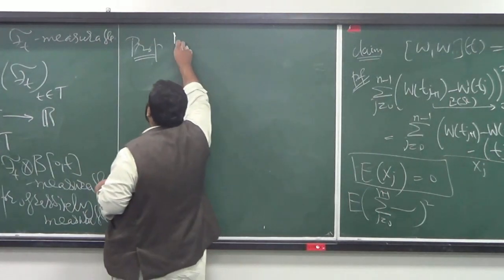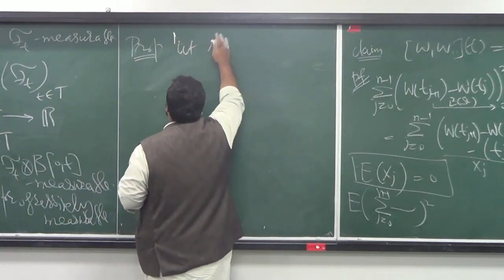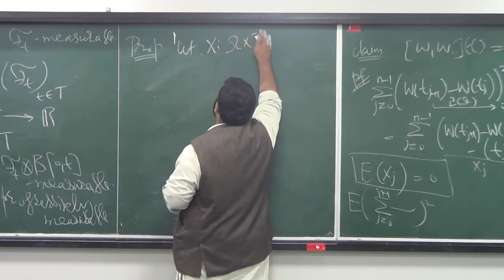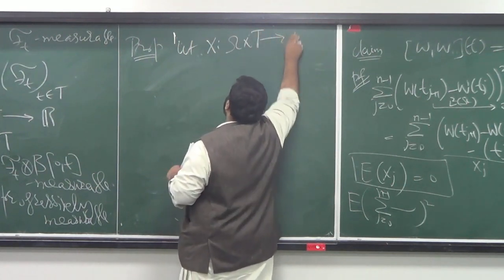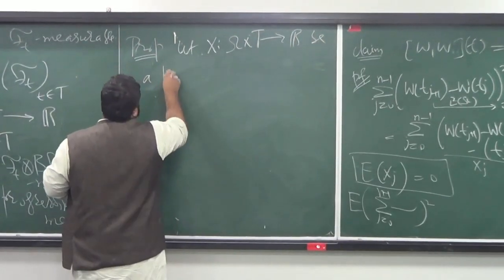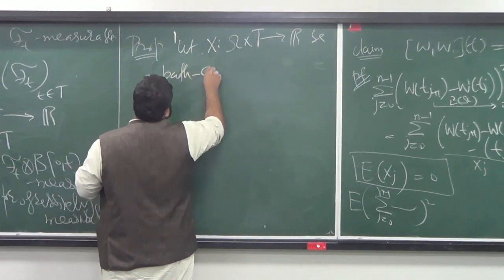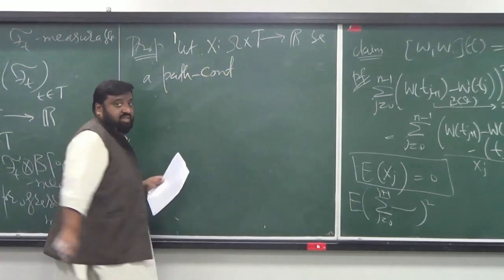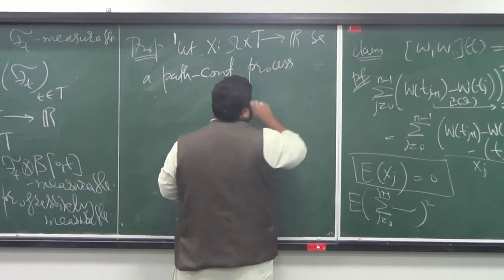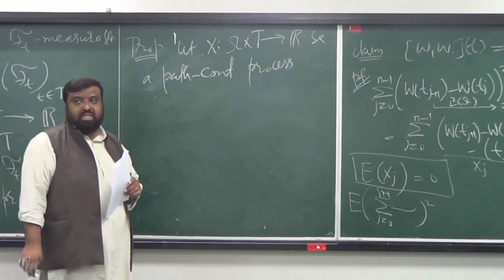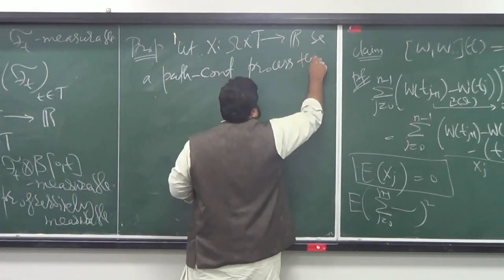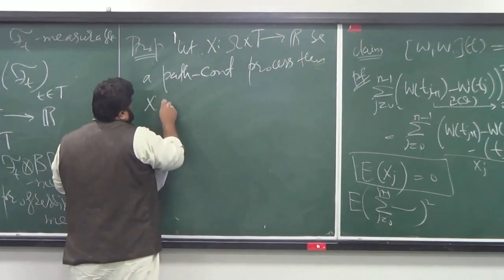This proposition gives a sufficient condition for a process to be progressively measurable — a condition already satisfied by Brownian motion. So Brownian motion is progressively measurable; that will be a consequence of this result. Imagine I have a process X defined on Ω, and it is path-continuous. If your process is path-continuous, then X is progressively measurable.